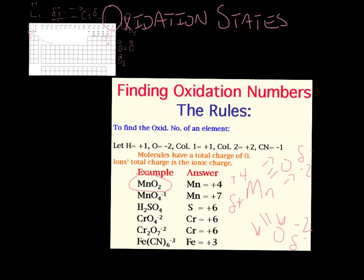So when all is said and done, the overall molecule's charge has to be zero. So if we write here, MnO2, you have a plus four on the manganese.